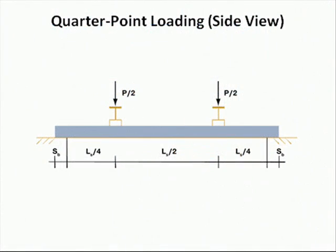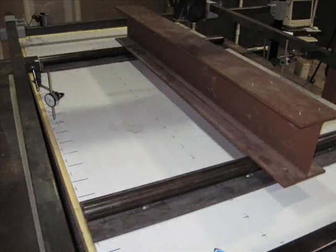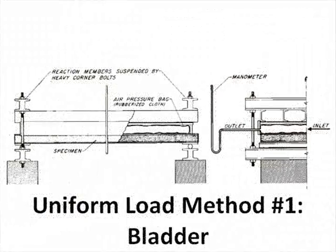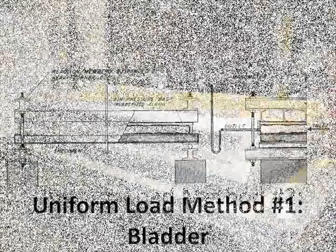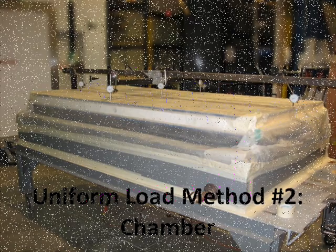Quarter point loading utilizes two additional steel rollers running parallel to the short dimension that are a quarter of the span from each support roller. Uniform loading is typically achieved by either an airtight bag pressurized between the specimen and a solid surface, or by creating a vacuum chamber where the specimen is one wall of the chamber and covering and sealing the specimen with airtight flexible sheets.